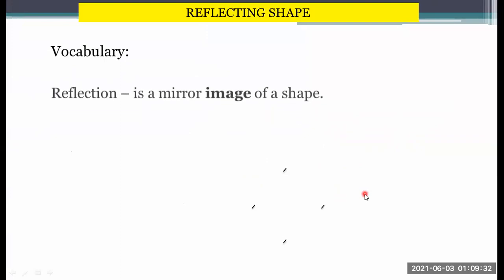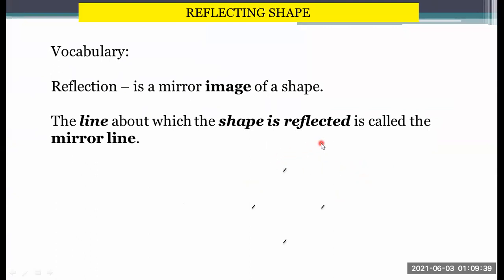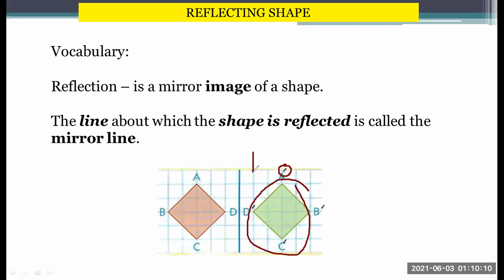Let's have our vocabulary. When we say reflection, it is a mirror image of a shape. The line about which the shape is reflected is called the mirror line. For example, this pink square is reflected on this mirror line, so the image of this shape is the green one. As you can see, the letter has a straight line on top which indicates that this shape is a mirror image. This is the image and this is the original shape.